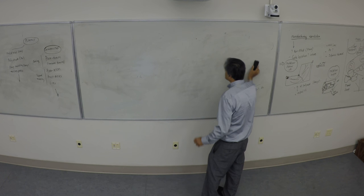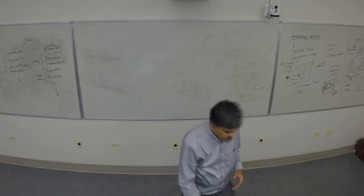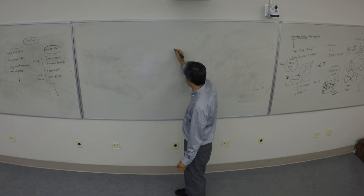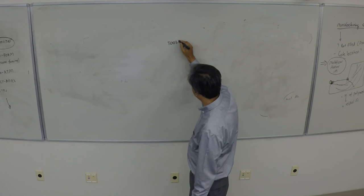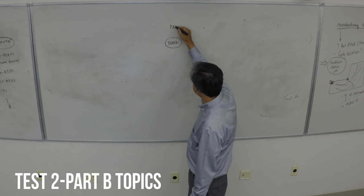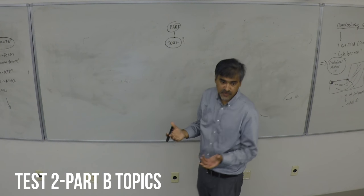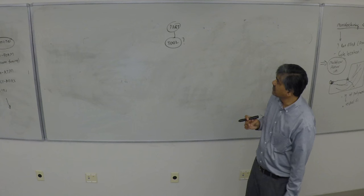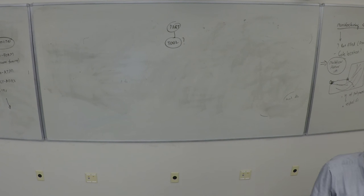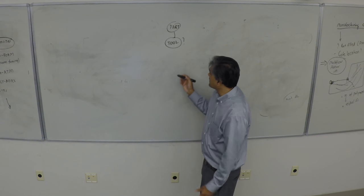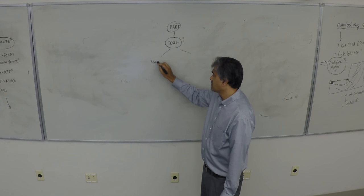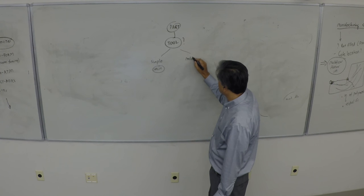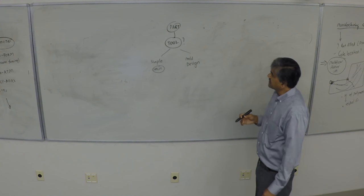Today I'll demo a few things. This will become the basis for part two of test two. One topic is how to make a tool for prototyping — the basic idea of how you make a tool to do some prototyping using the split option, and a more involved approach using the mold design tool as part of the Inventor family.